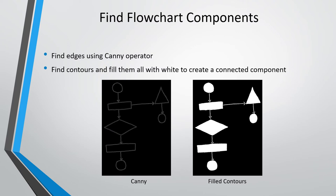To find the flowchart components, I start by finding the edges using the canny operator. After extracting the edges, I found the contours of the image and filled all the contours with white. This will create a set of connected components and will provide a clear separation between the flowchart and the background.